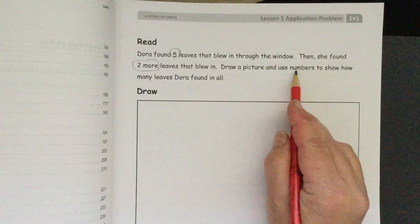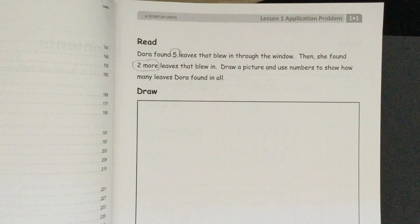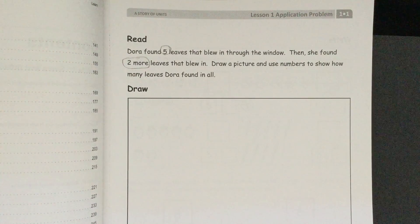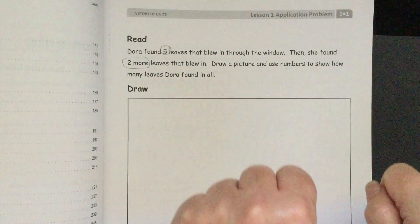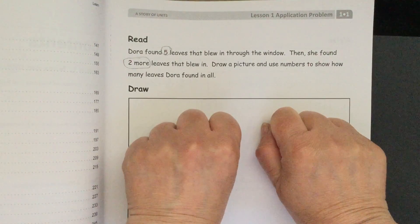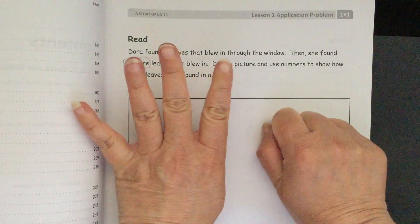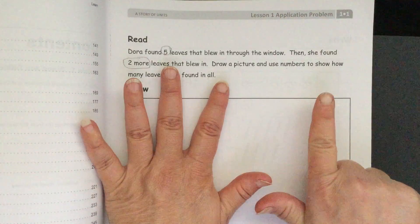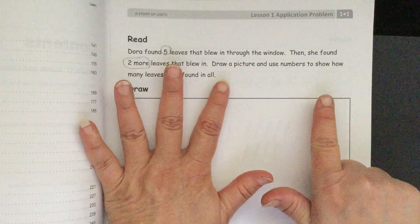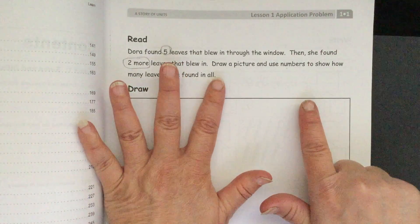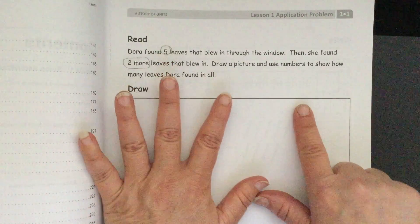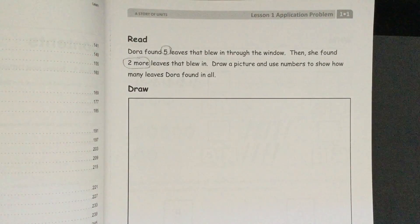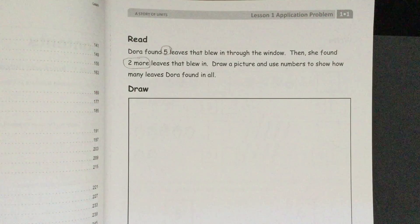We'll have to draw a picture and use numbers to show how many leaves Dora found in all. This is something that we could do counting on our fingers. On each hand we have 5 fingers. We can start with our 1, 2, 3, 4, 5. Those are our 5 leaves there. And then 2 more blew in, so add 1, 2 from the other hand. If we count them all, we have 5 and 2, which we could count 1, 2, 3, 4, 5, 6, 7. Then Dora found 7 leaves in all.